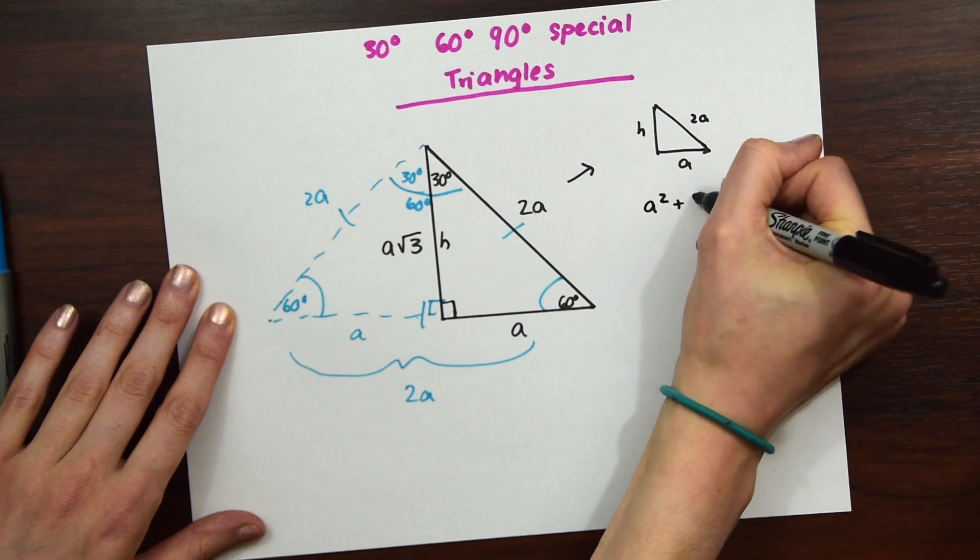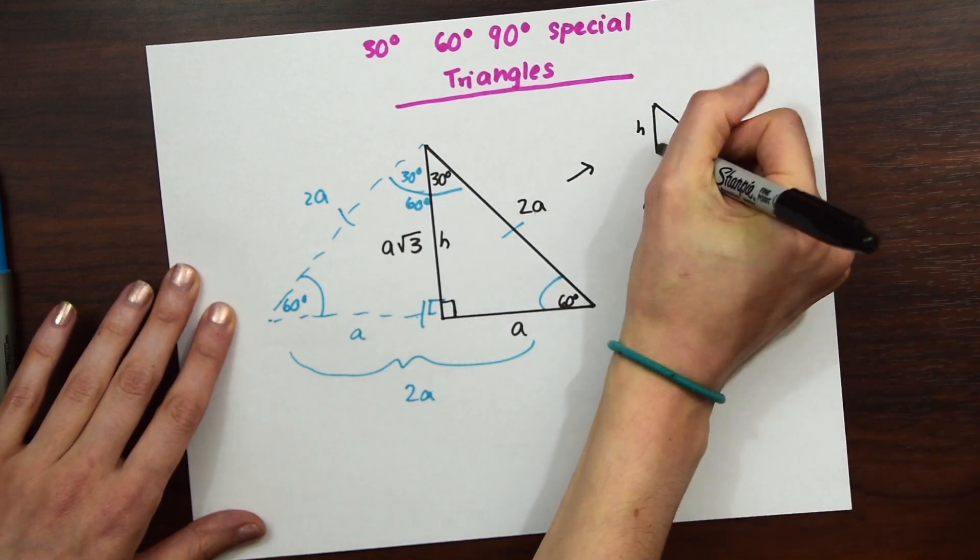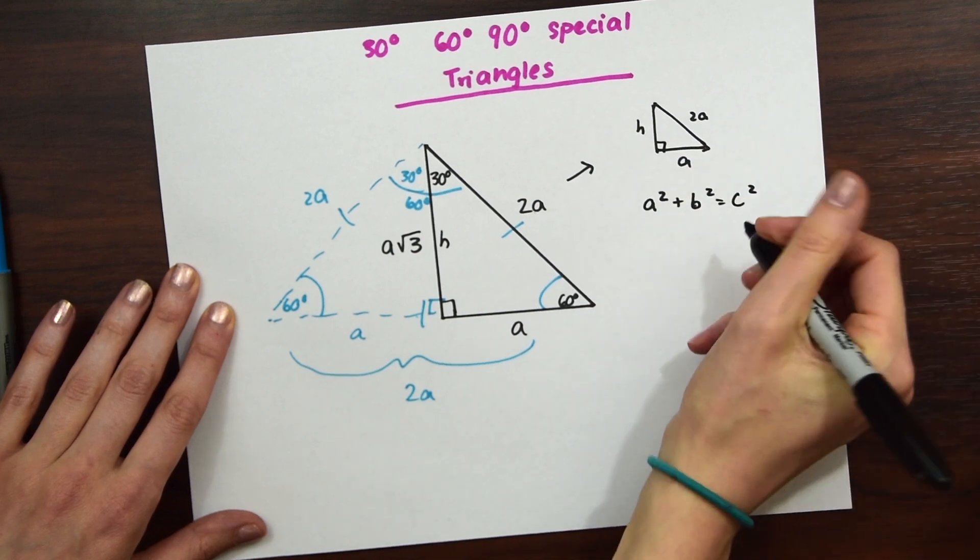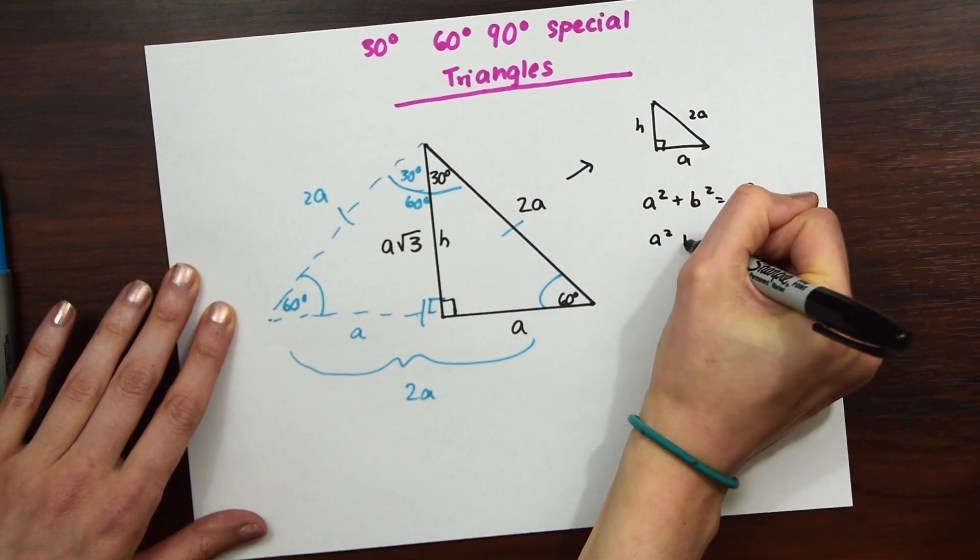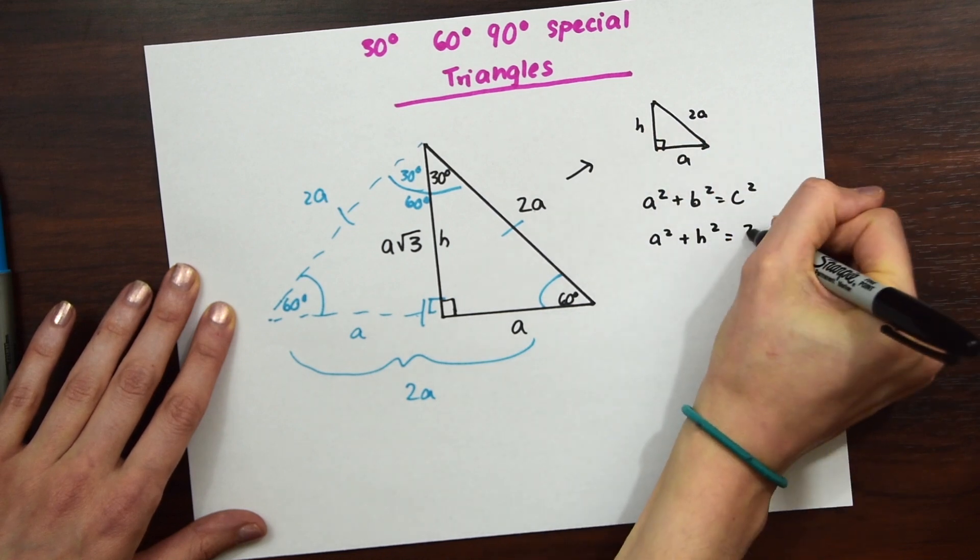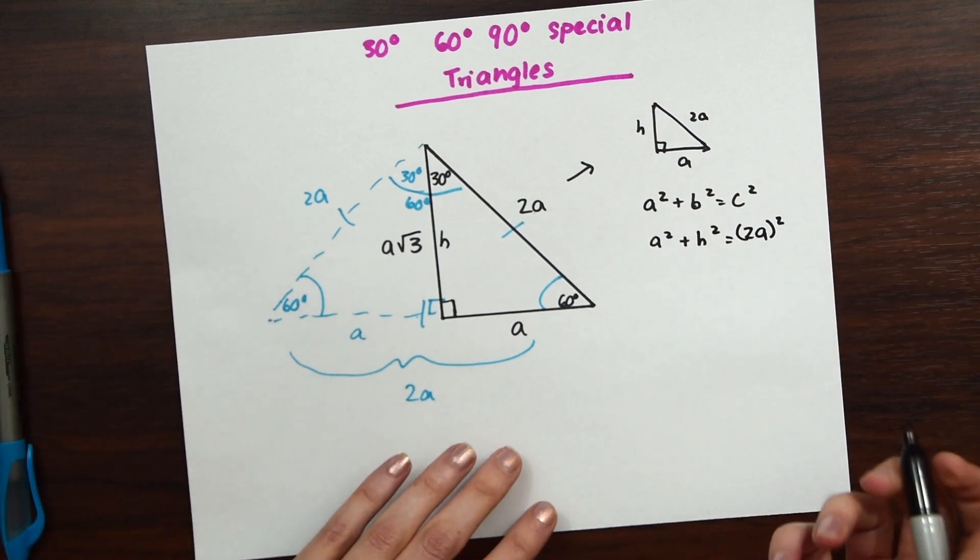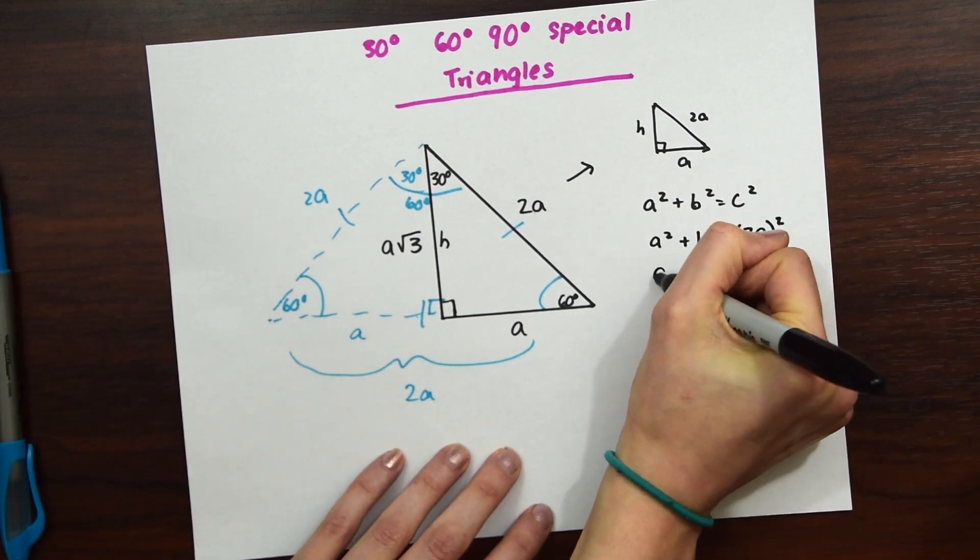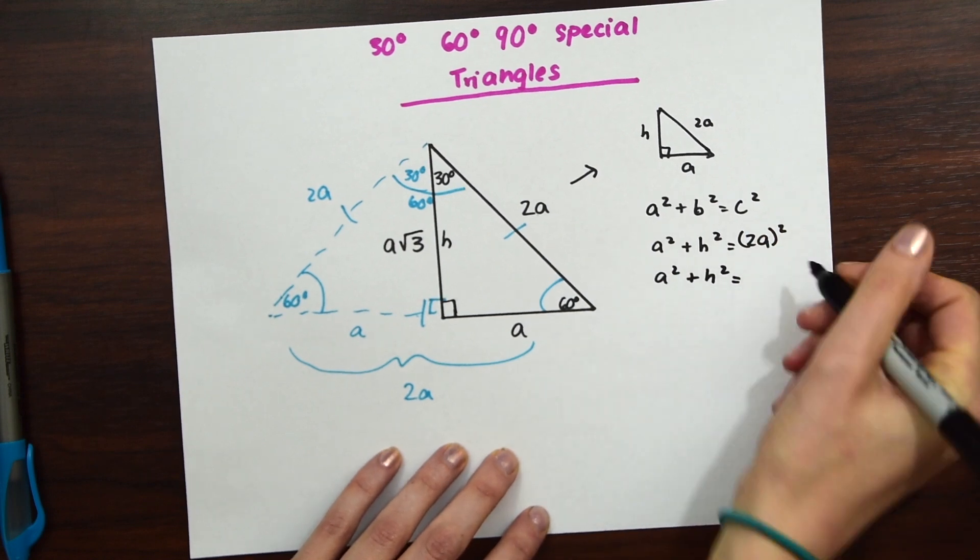So Pythagorean theorem is A squared plus B squared equals C squared. So now if we put it in terms of our 30, 60, 90 degree triangle, we have A squared plus our unknown, our H squared equals 2A squared. So this is the whole thing to make sure we have this parentheses going on. So this is equal to A squared plus H squared equals 4A squared.